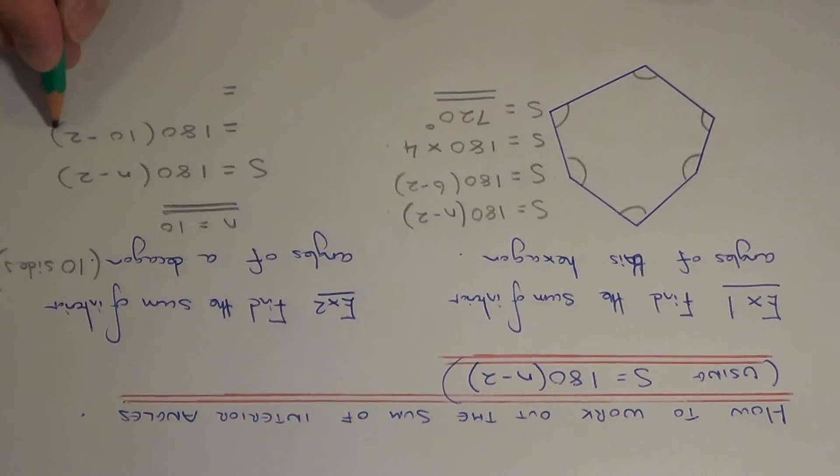So if we work out the bit in the bracket, that is 8, so we need to work out 180 times by 8.